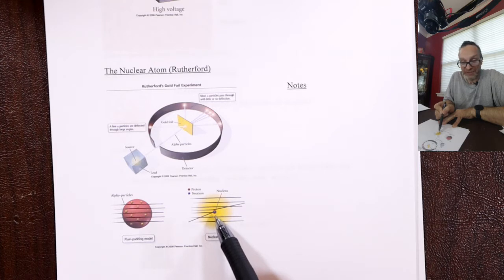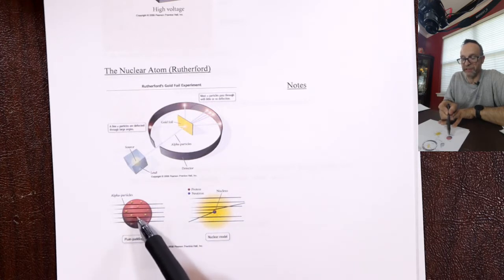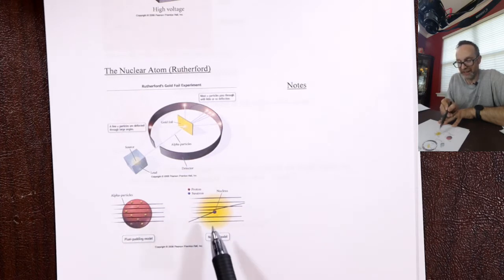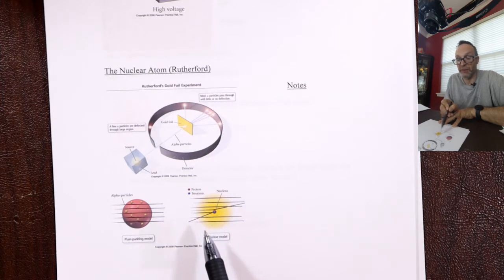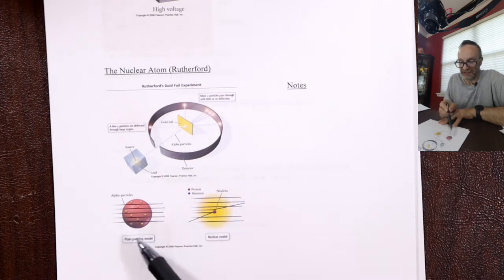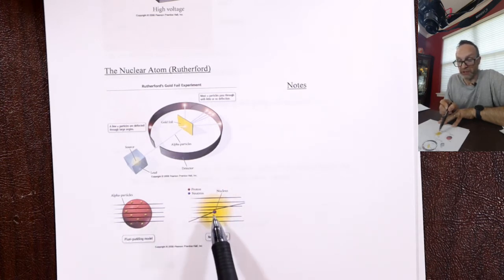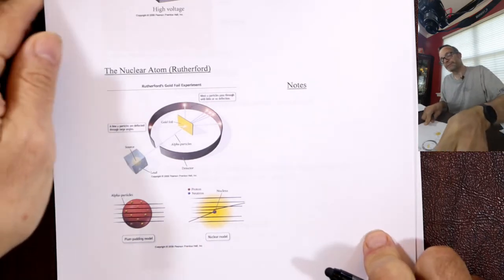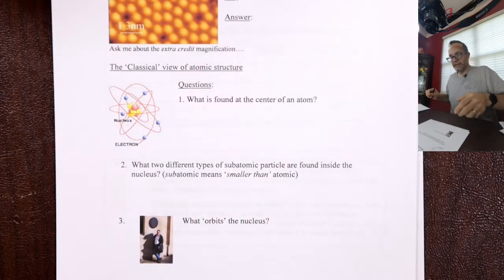Rutherford then came along and did probably the most elegant experiment ever, proving that an atom is mostly empty space — and that's where the electrons are. Only 0.001% of the size of an atom is the nucleus, where most of the matter is. That's the nuclear model versus the plum pudding model. Thomson was in Cambridge, Rutherford was in Manchester — back then Manchester University was one of the top schools in the UK. Eventually Rutherford did the gold foil experiment and it was done.